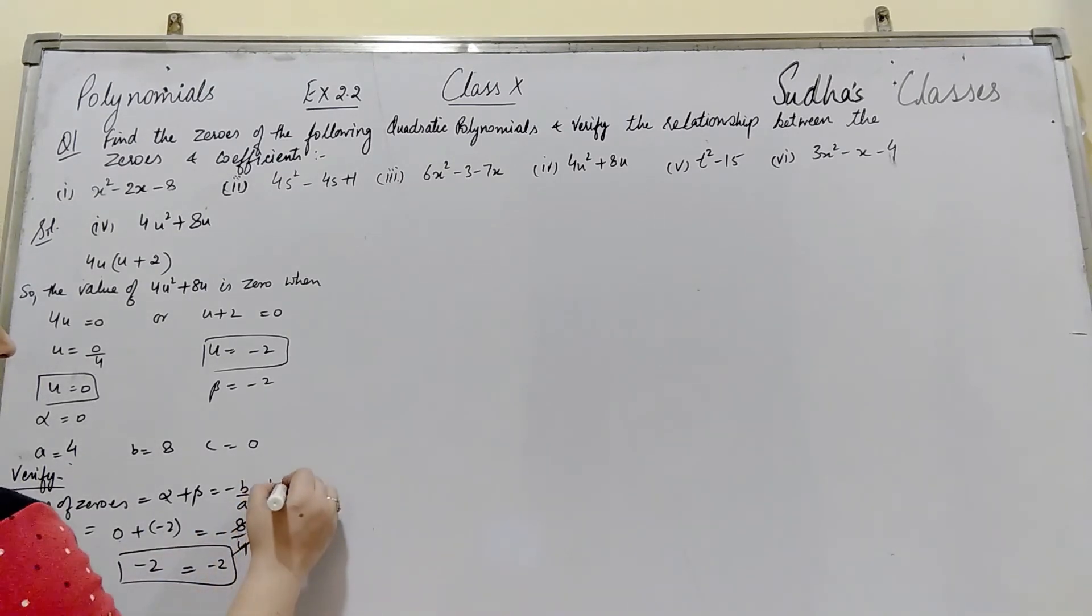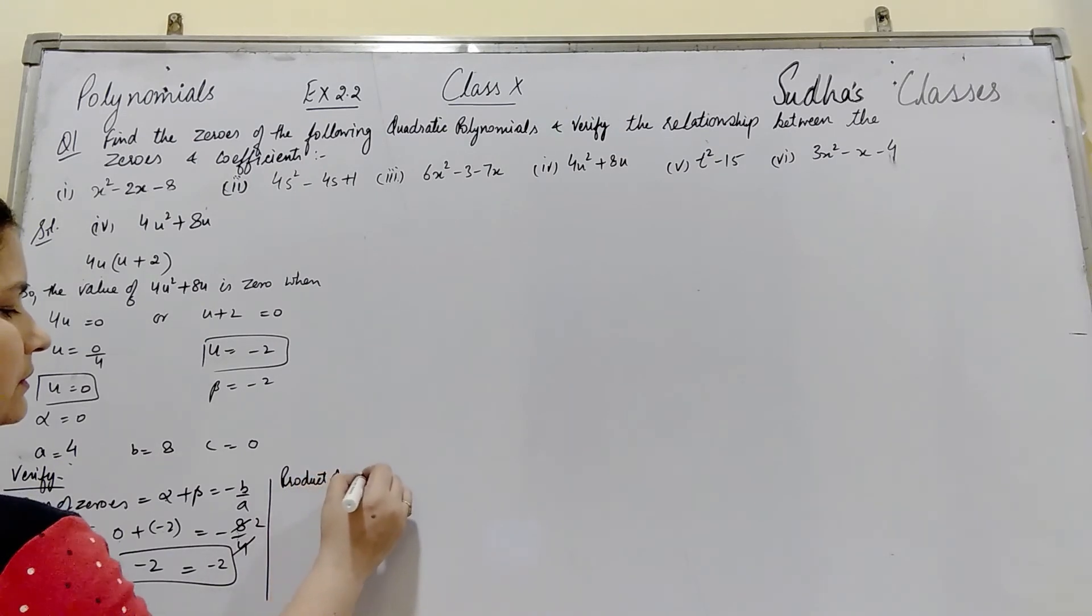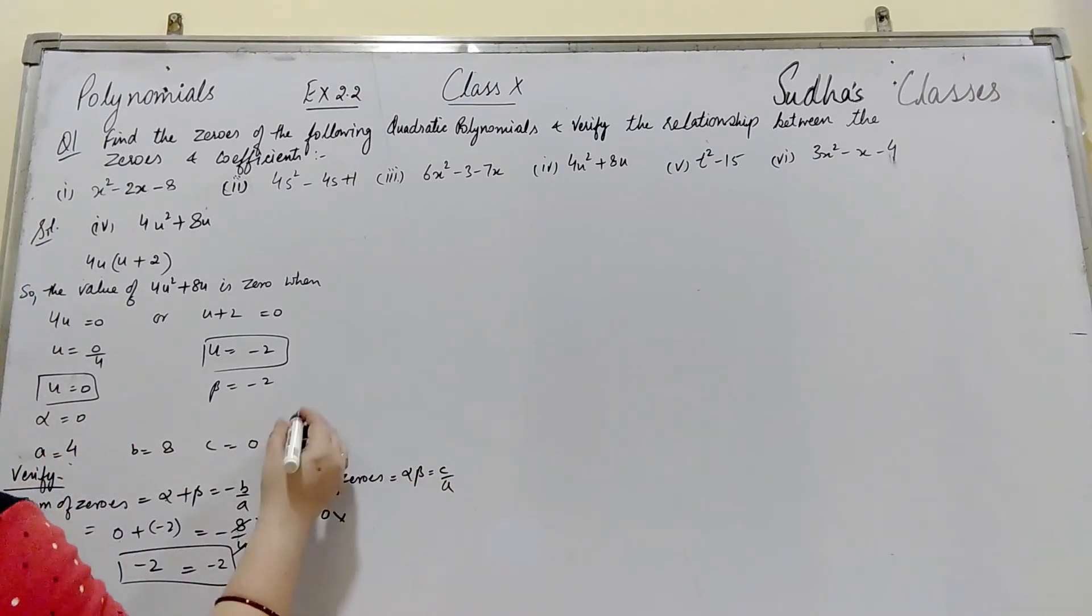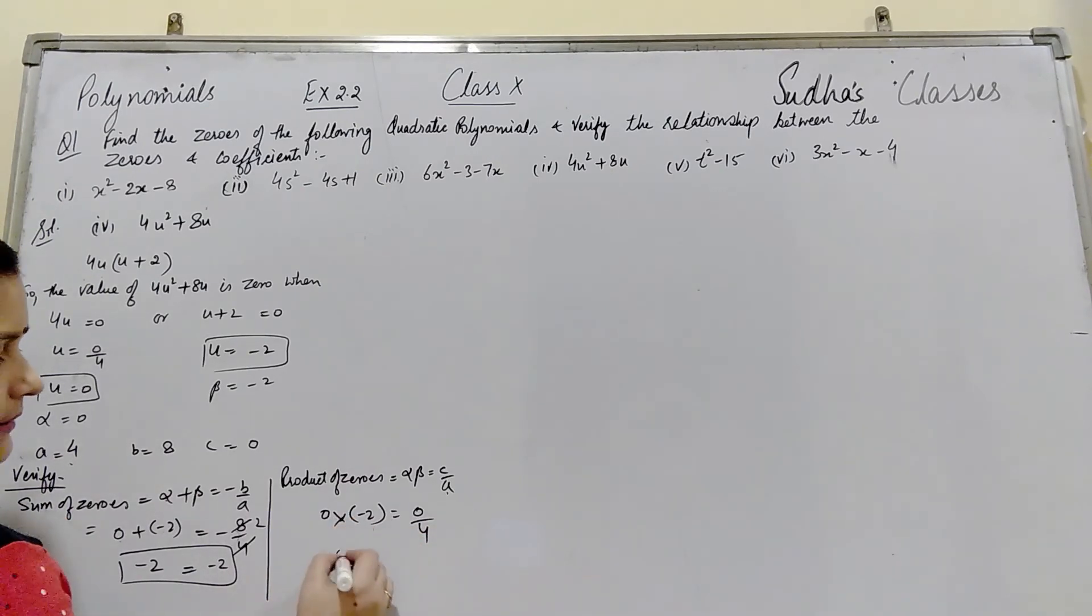Now we find the product of zeros: alpha × beta = c/a. Alpha = 0 multiplied by beta = -2 equals c/a where c = 0 and a = 4. So 0 × (-2) = 0/4. Both equal 0, so these two are equal.